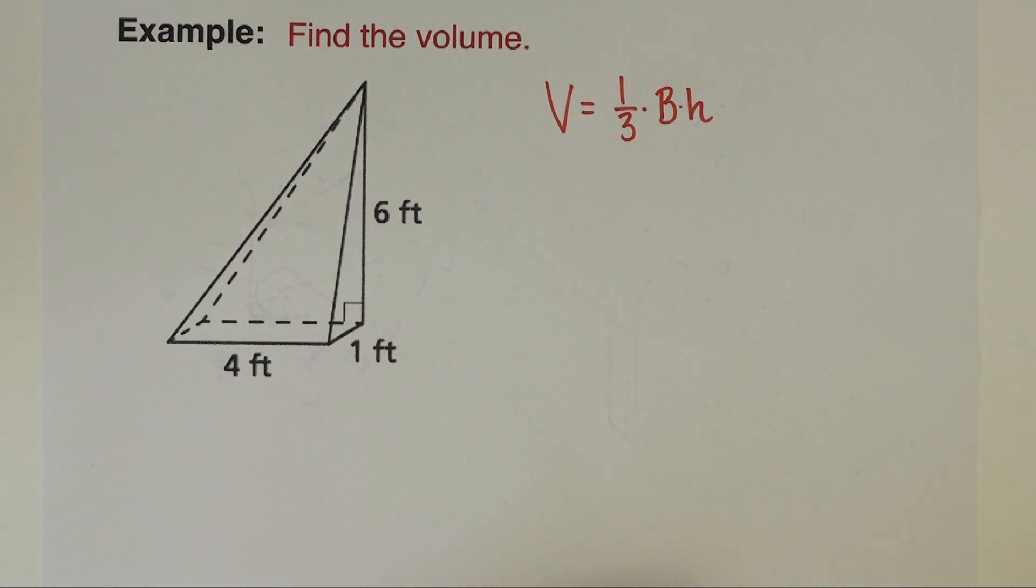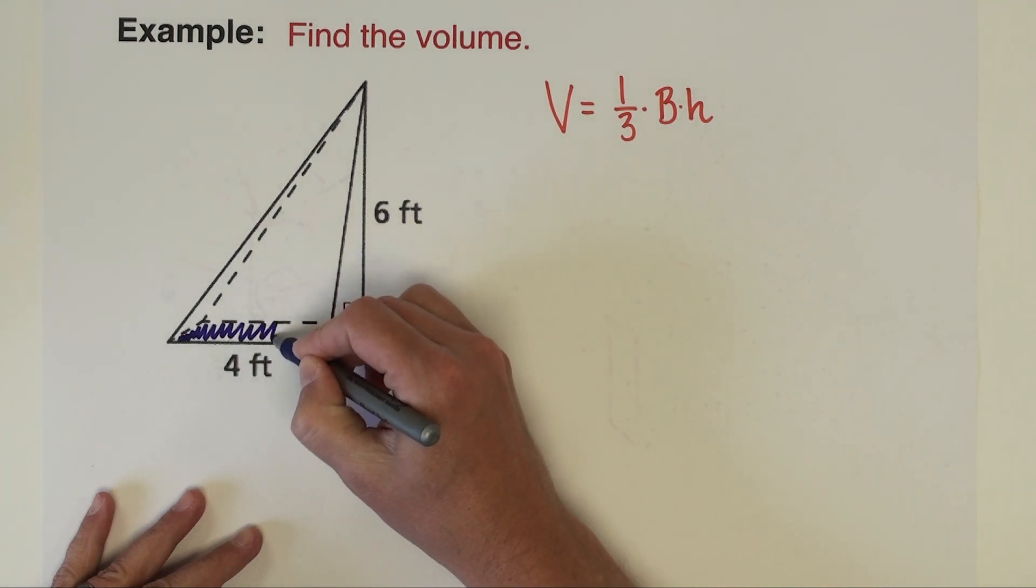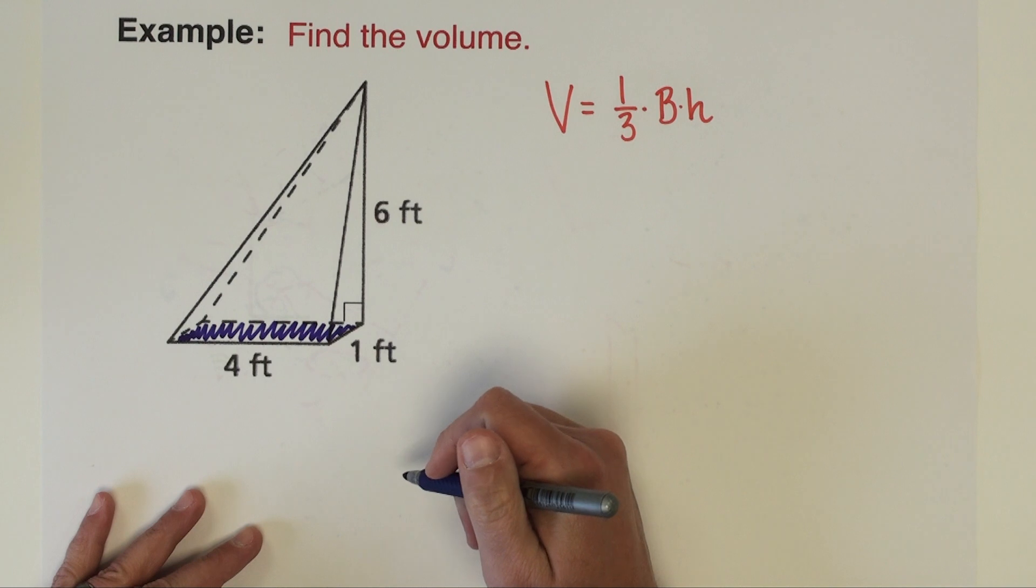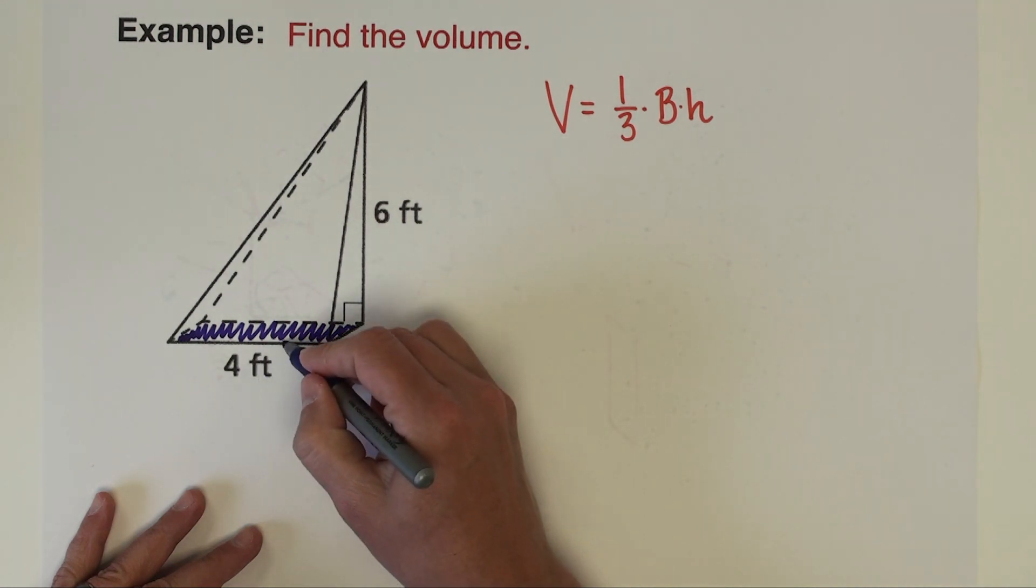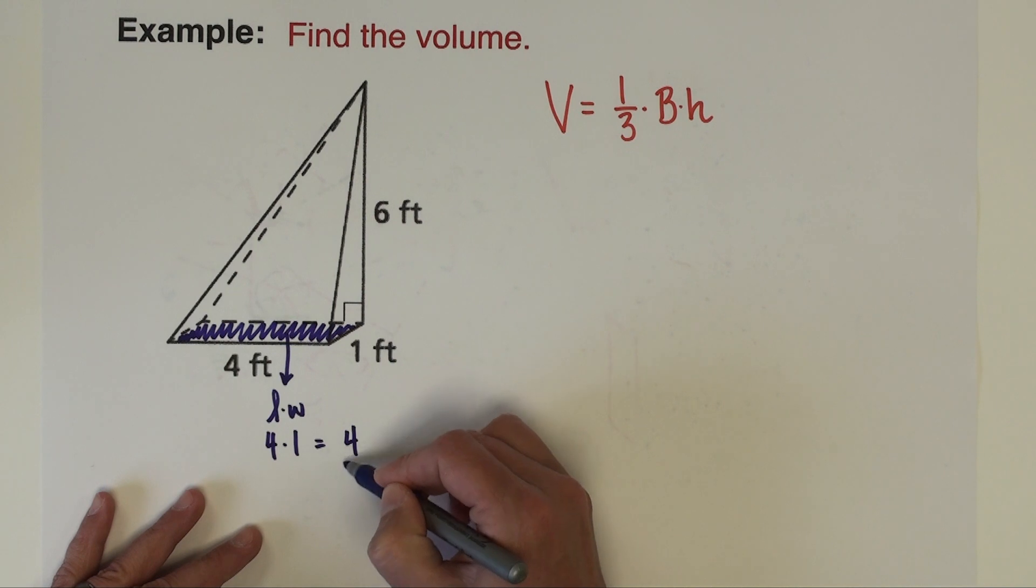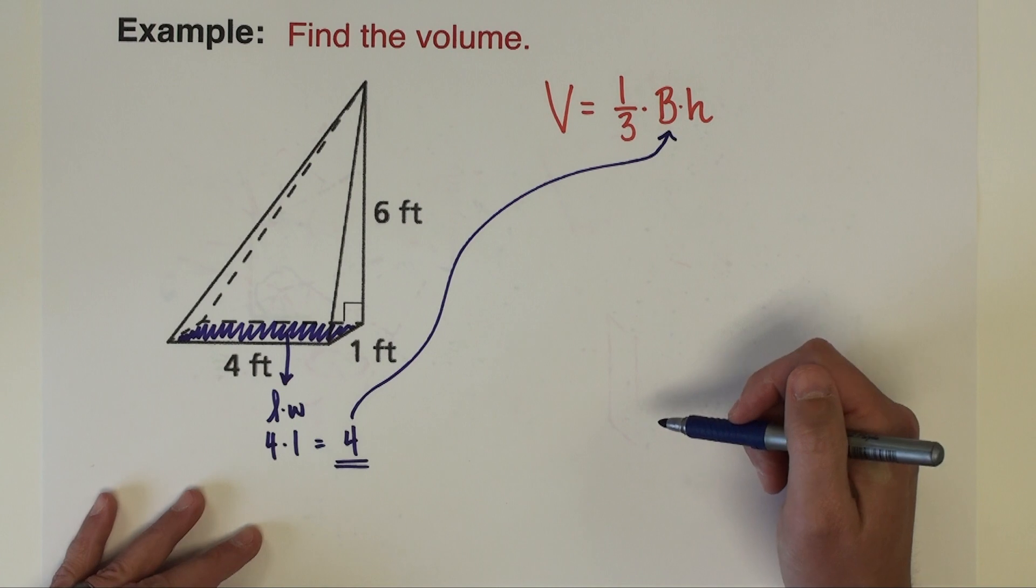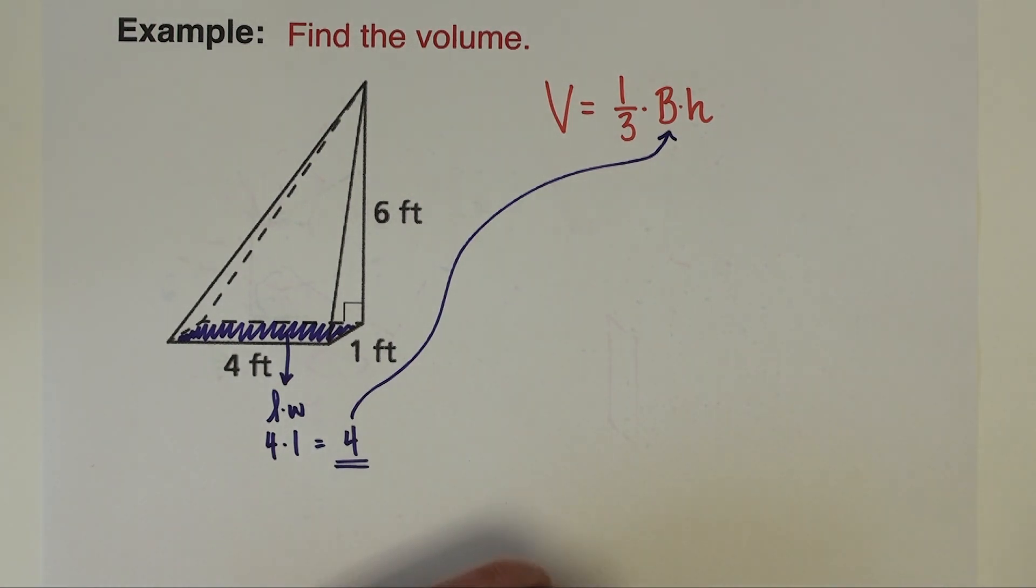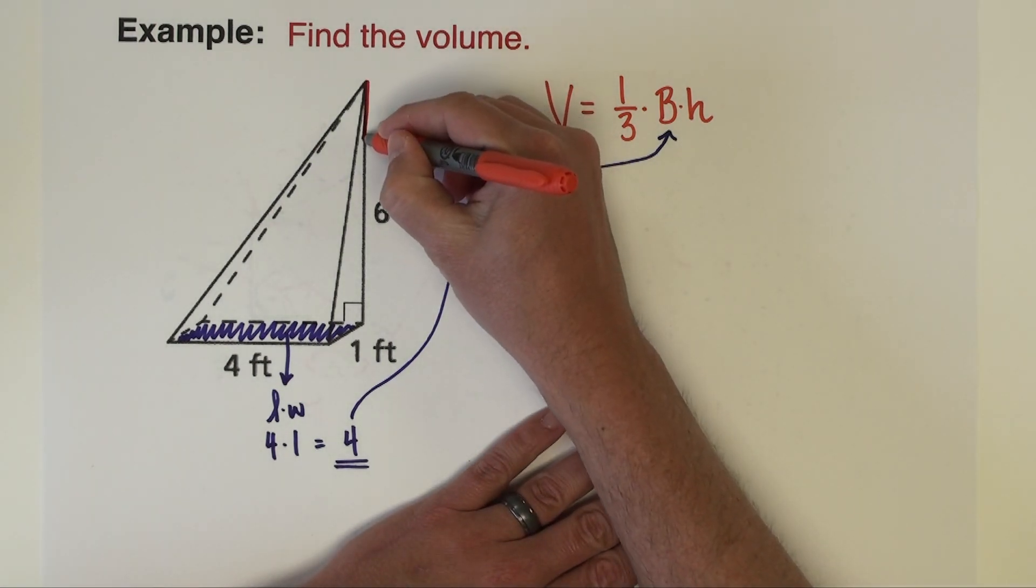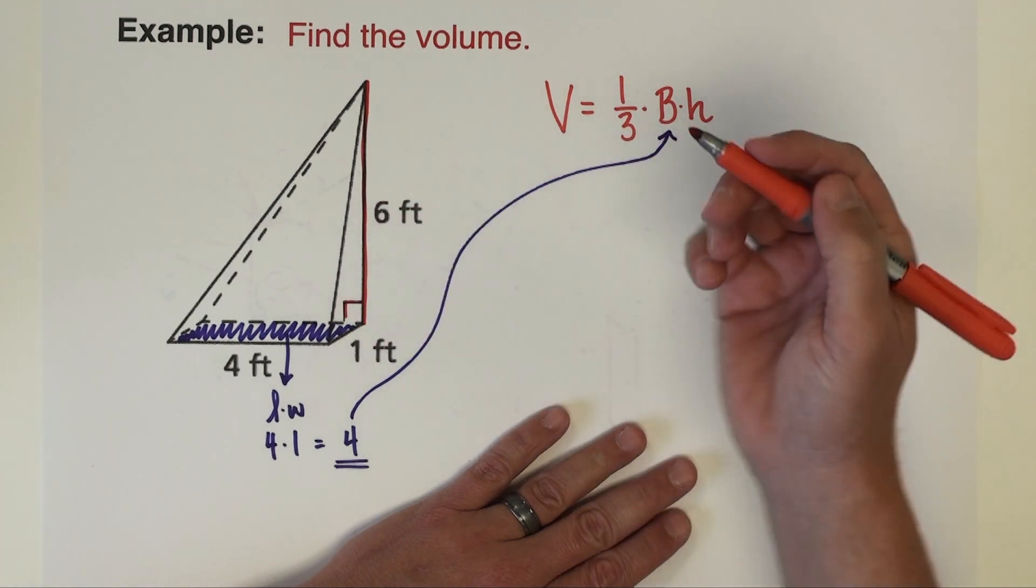Let's work out the area of the base. The base of this pyramid is a rectangle, and to find the area of this rectangle we're going to do its length times its width, which is 4 times 1 or 4. So that's going to be our value into the base area. Of course, the height is just simply how tall the pyramid is. This is the length coming down making perpendicular with the base, so 6 is our height.